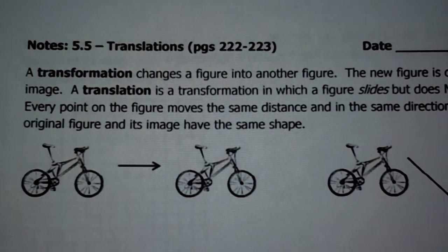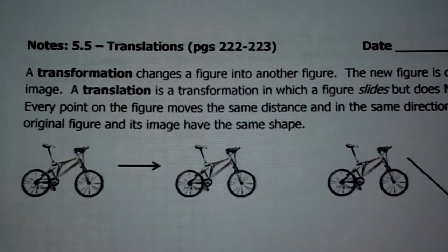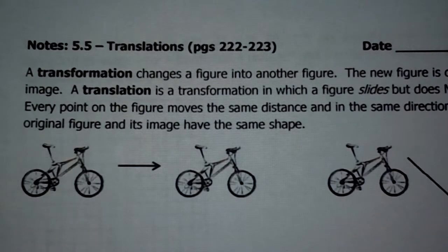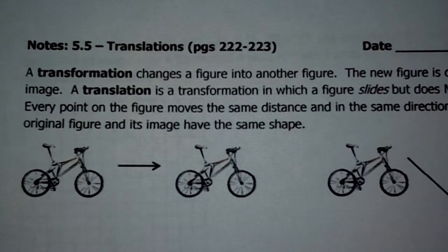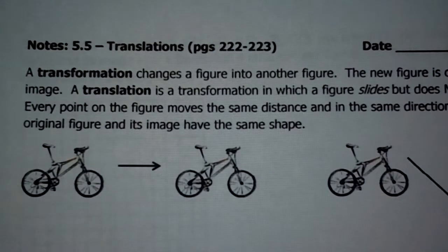A translation is a transformation in which the figure slides but it doesn't turn at all. So it just slides — no turns, no reflecting, just a slide. Every point on the figure moves the same distance and in the same direction. The original figure and its image have the same exact shape. We just changed where it was, and all we're doing is sliding the figure.